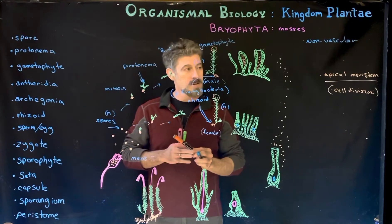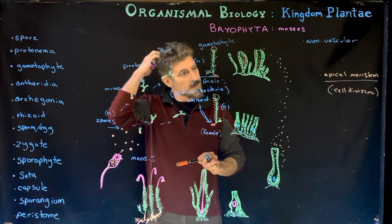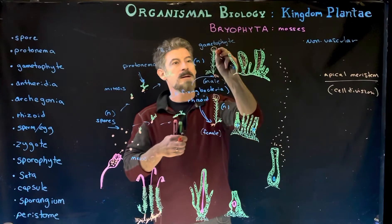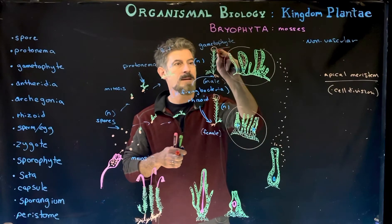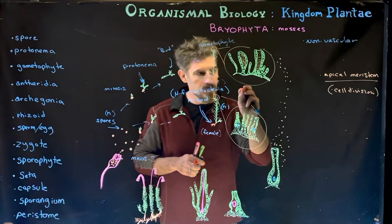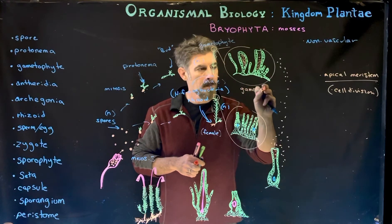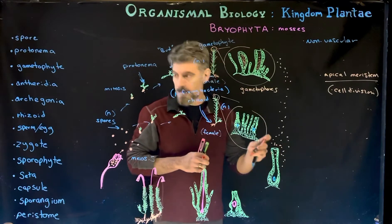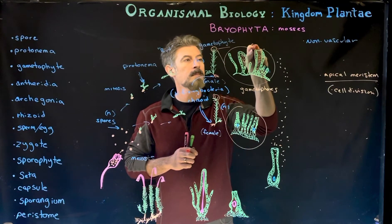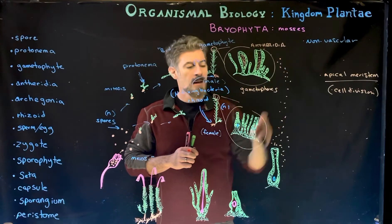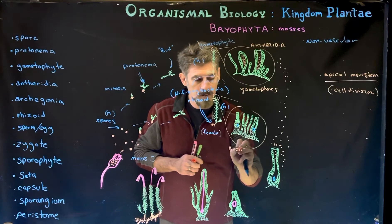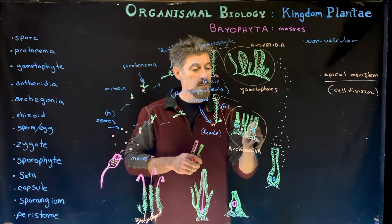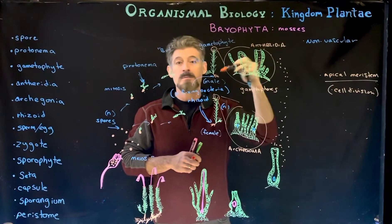We have analogous structures here with apical meristems — sites where rapid cell division takes place — and new structures form. These are called gametophores, structures that produce the gametes. There are two types: ones that produce sperm, called the antheridia, and female egg-producing ones called the archegonia.